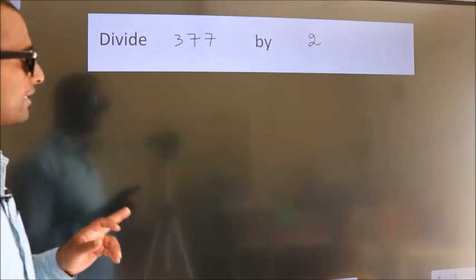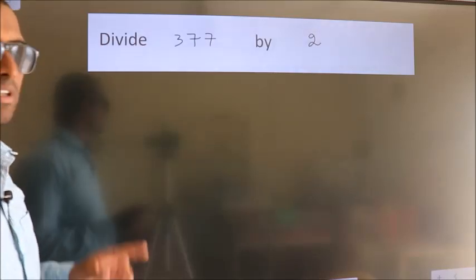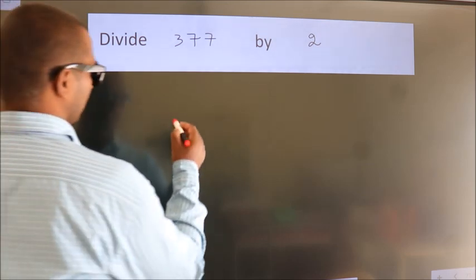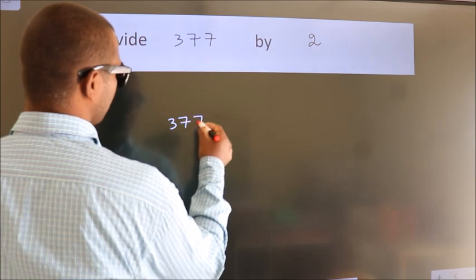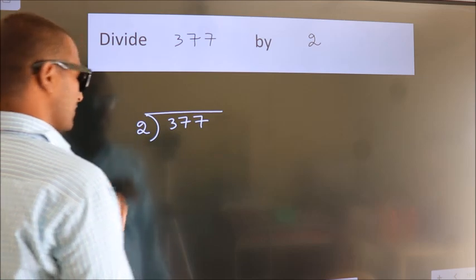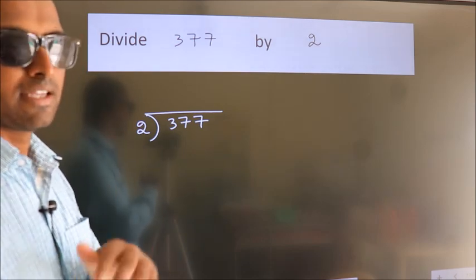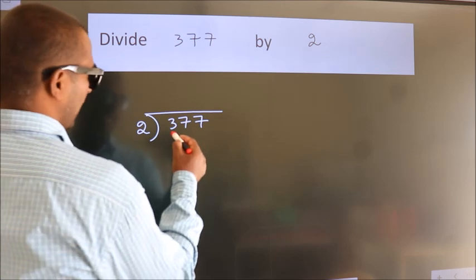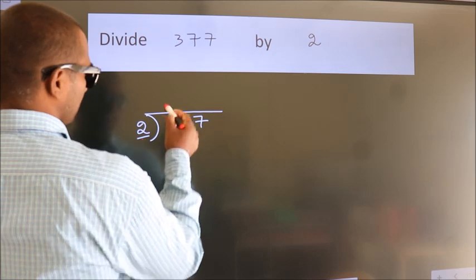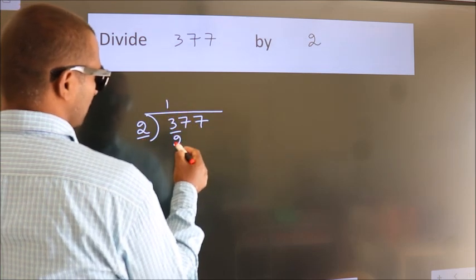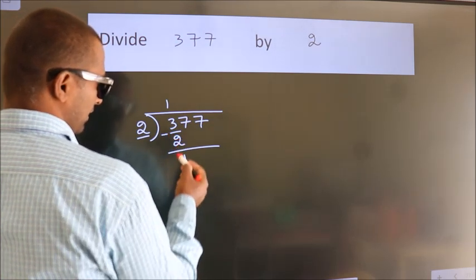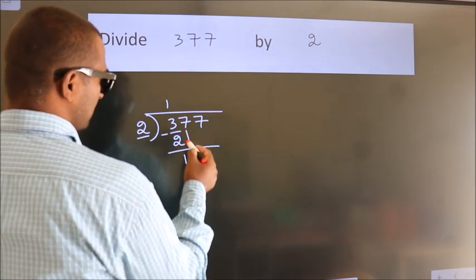Divide 377 by 2. To do this division we should frame it in this way: 377 here, 2 here. This is your step 1. Next, here we have 3. A number close to 3 in the 2 times table is 2 — 1 times 2 is 2. Now we subtract, we get 1. After this, bring down the beside number.